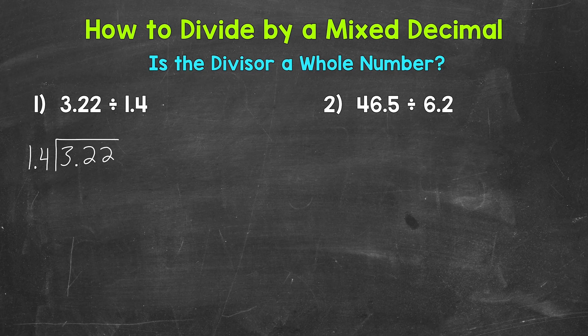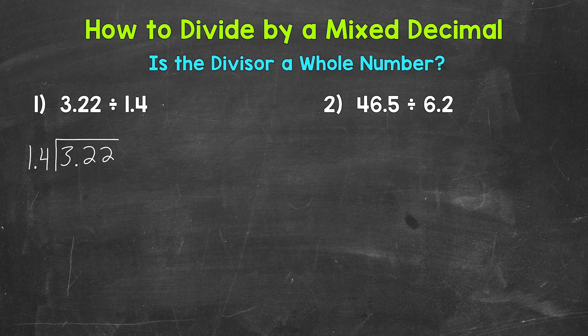Now we have our division problem set up. But before we go through the division process, we have a problem that involves decimals, so we always need to check: is the divisor a whole number? 1 and 4 tenths is not a whole number, so we need to make it a whole number. We do this by multiplying the divisor by a power of 10, which will shift the digits to the left and make the divisor whole.